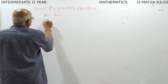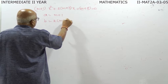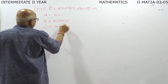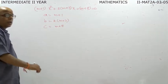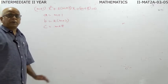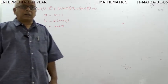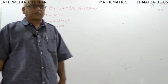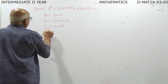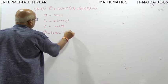For equal roots, we set a equal to m plus 1, b equal to 2 into m plus 3, c equal to m plus 8, where a is the x-squared coefficient, b is the x coefficient, and c is the constant. We then use the condition b-squared minus 4ac equal to zero.